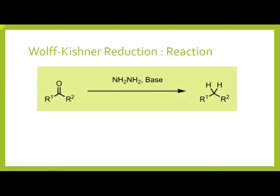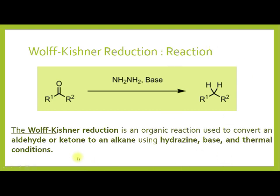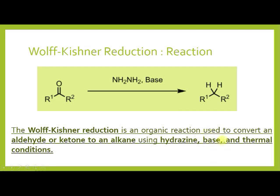First we will see what is Wolff-Kishner reduction, what is the starting material, which reagents are used and what will be the product. Wolff-Kishner reduction is an organic reaction used to convert an aldehyde or ketone to an alkane using hydrazine hydrate as a reagent in the presence of a base, generally NaOH or KOH, under thermal conditions.